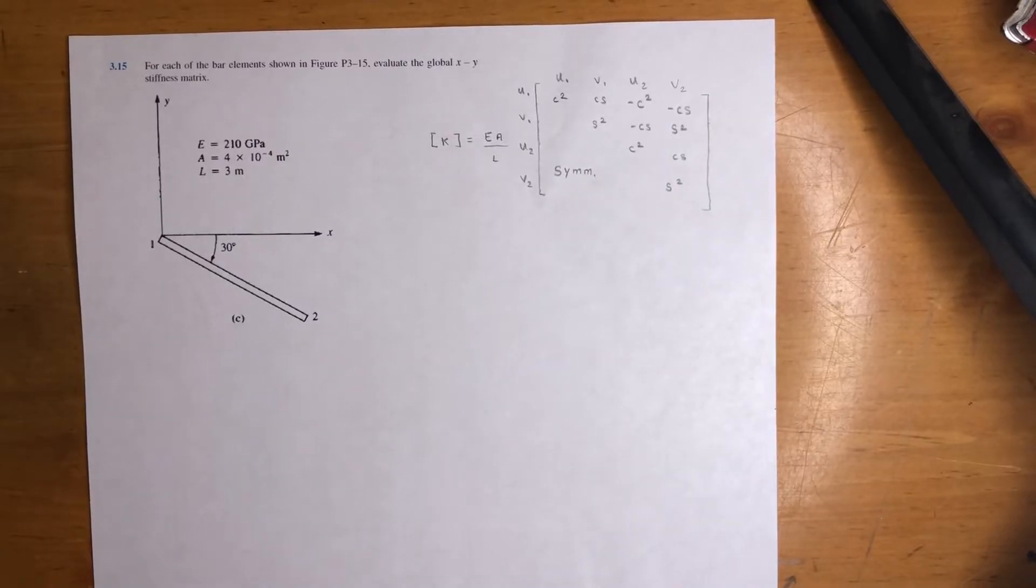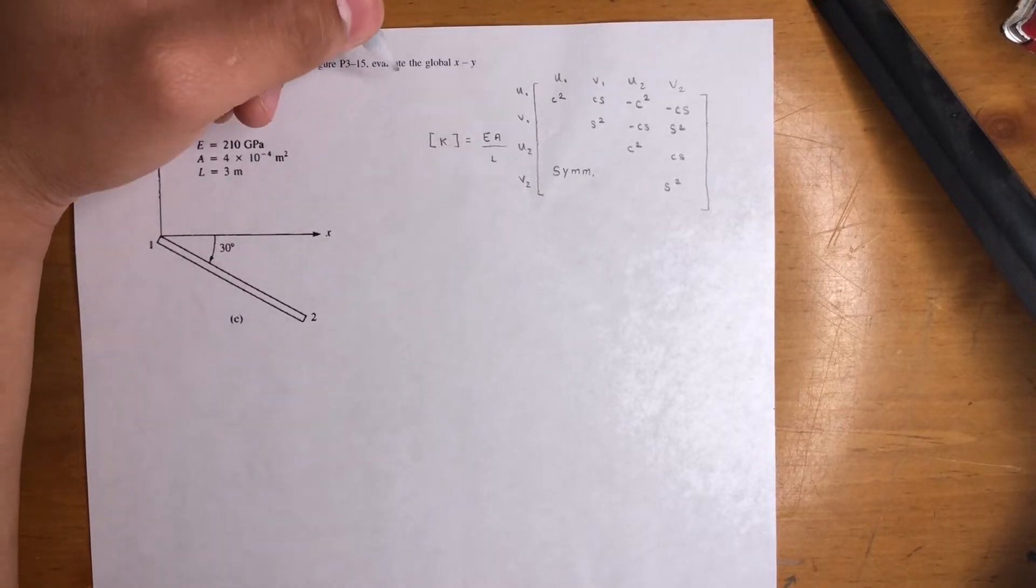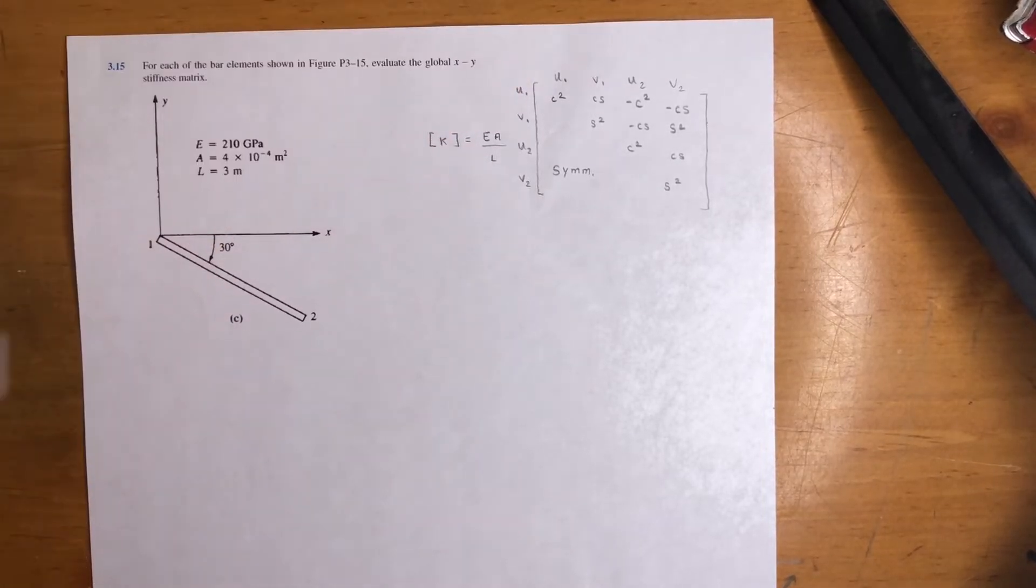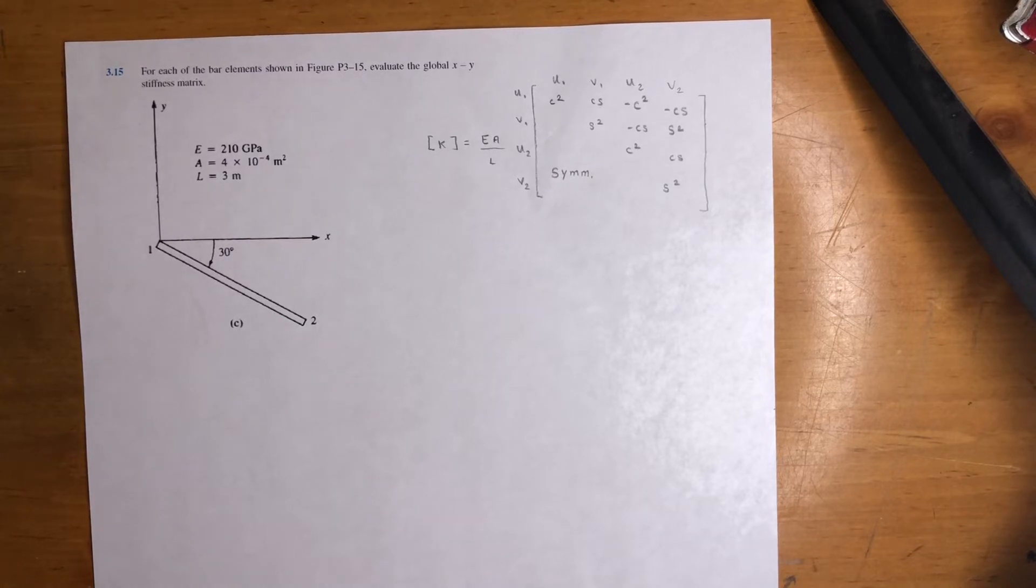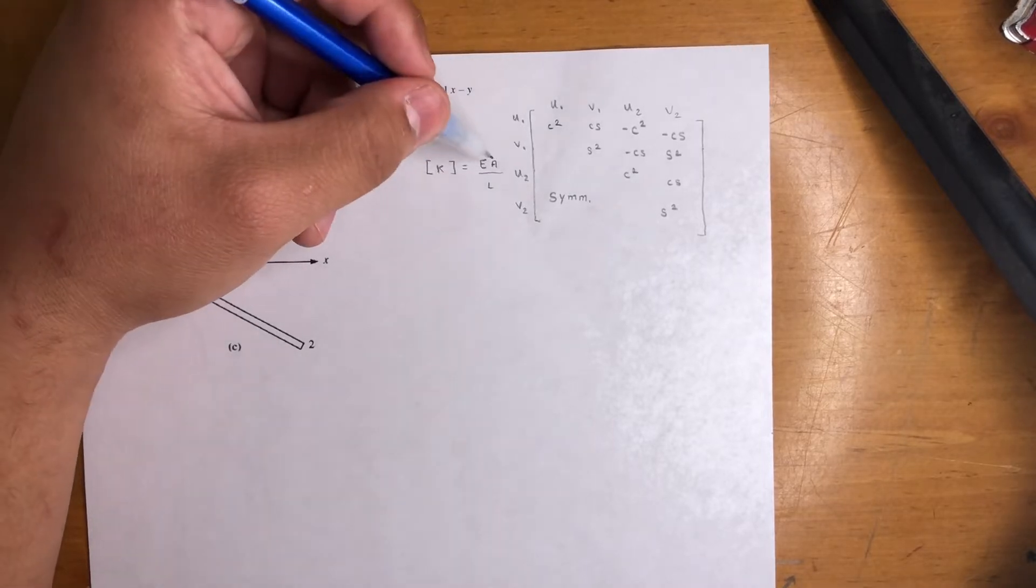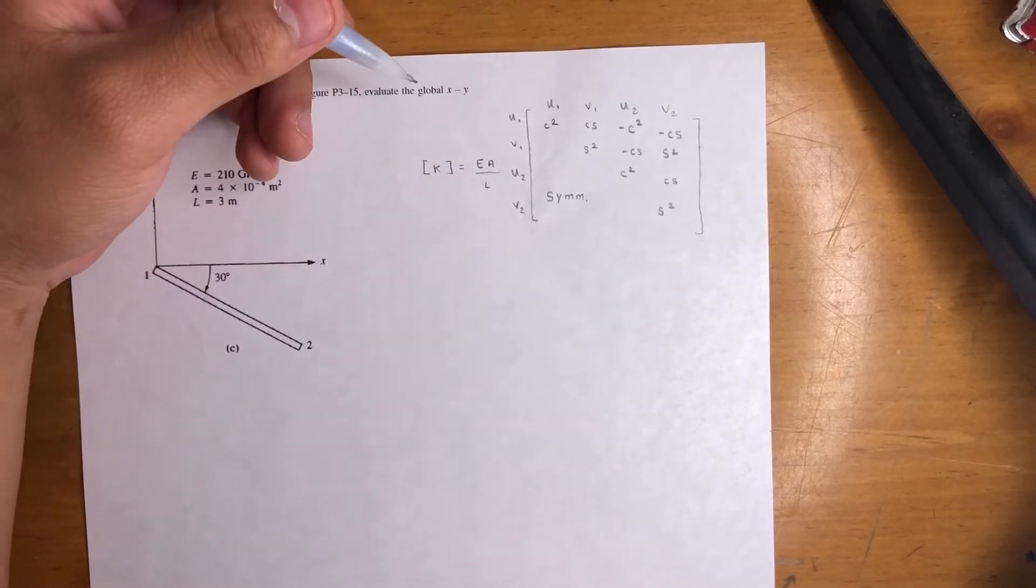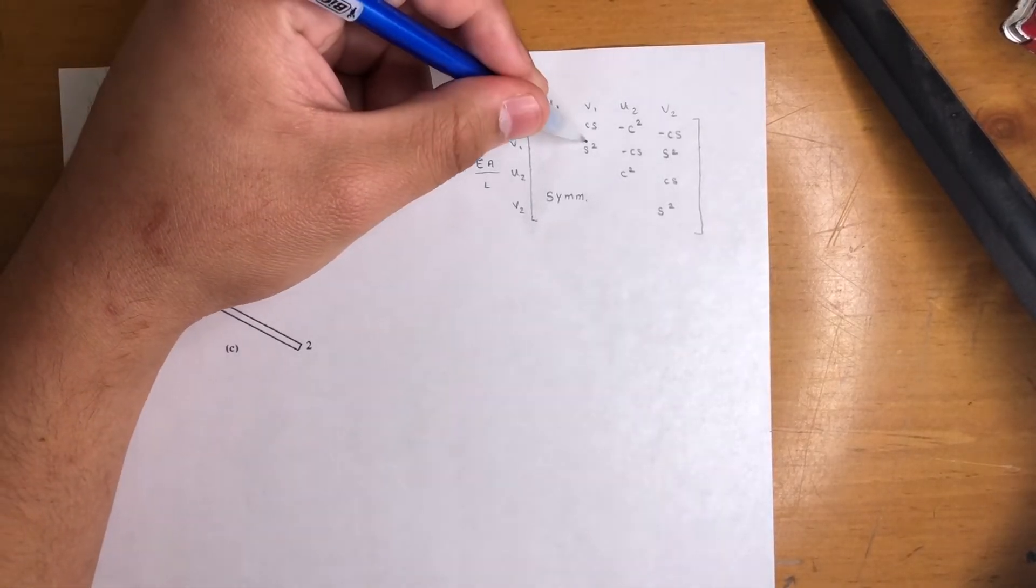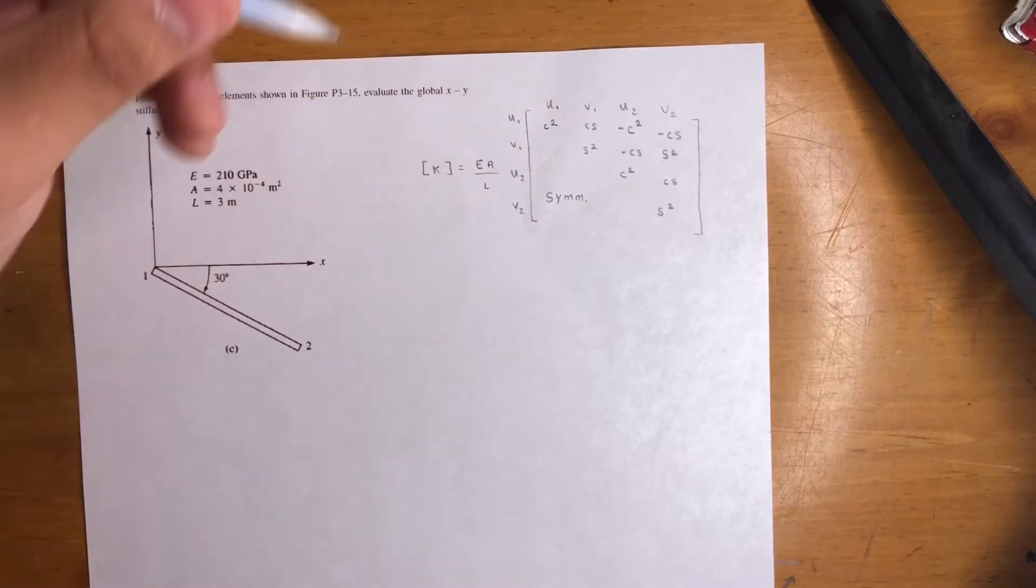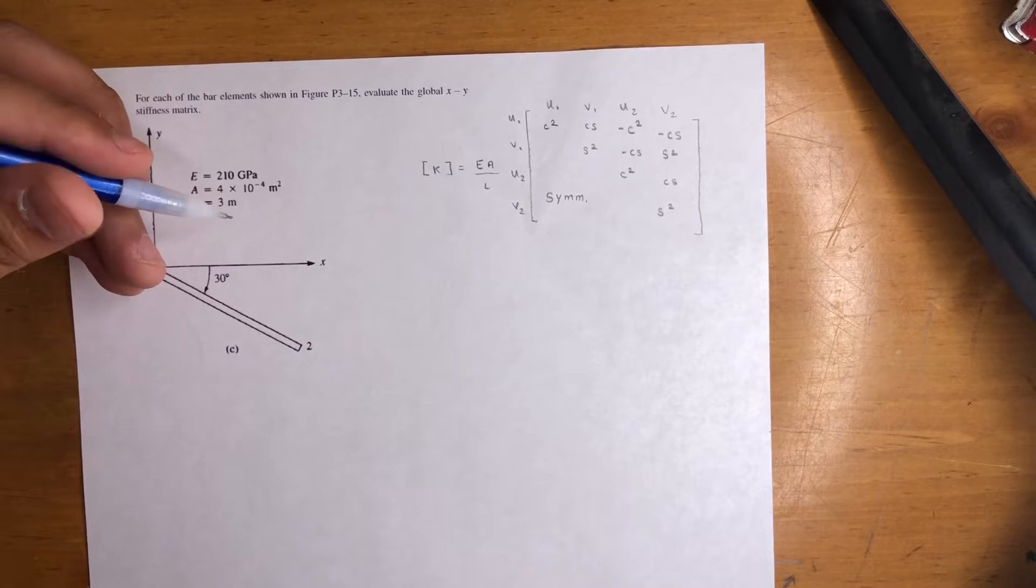All right, so again this is the goal right here. This is the stiffness matrix for these types of problems. There's a lot of theory - I've mentioned in the other videos - they use transformation matrices and local displacement vectors and all that good stuff to finally obtain this. Finding out how they got here doesn't really matter. All that matters, at least for you, is how to use it on the exam. So the C right here is just cosine, the S is sine of the angle, and that's pretty much it to these problems.